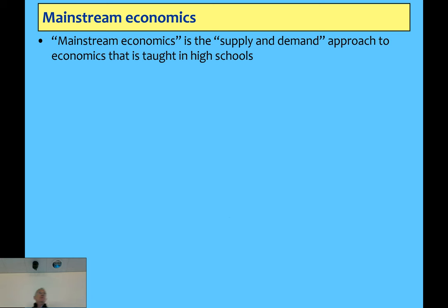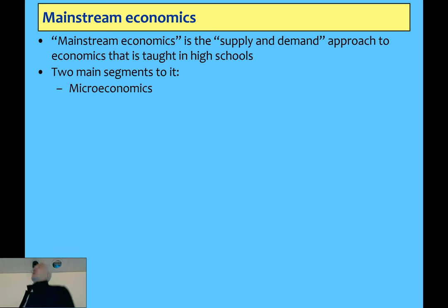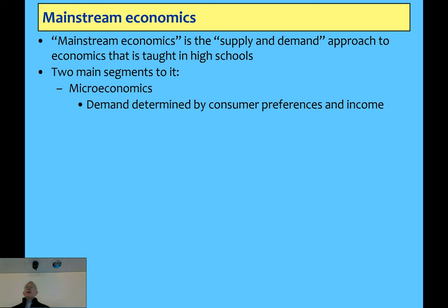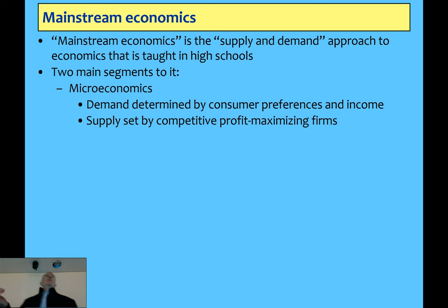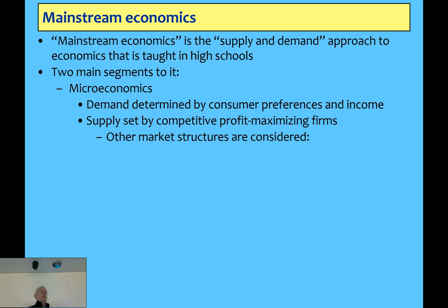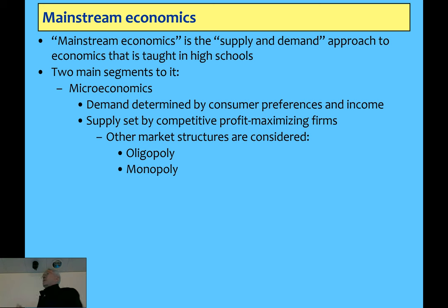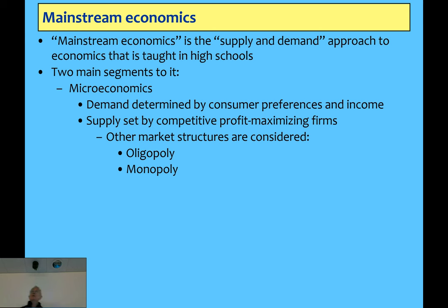Mainstream economics is the supply and demand approach you're taught at high school. Even if you haven't done it, you've all seen the idea of intersecting supply and demand curves. There are two major components: microeconomics, which is about how individual markets behave — demand comes from consumers trying to maximise their utility subject to their income, and supply is set mainly by the model of competitive firms that allegedly can't set prices. You'll also be taught about different market structures — oligopoly where there are a few firms, and monopoly where there's just a single firm. All that will be covered in more detail in Policy and Principles.